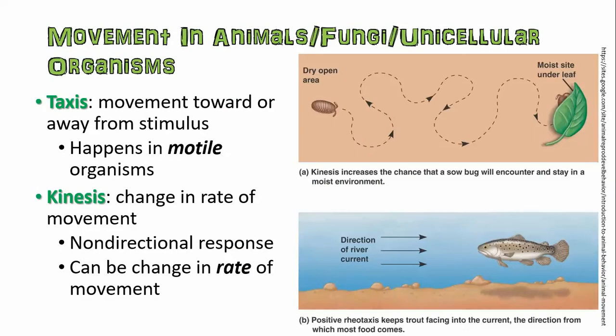You can also look at movement in animals, fungi, or unicellular organisms. Taxis is movement towards or away from a stimulus, and usually it involves some sort of prefix. For example, chemotaxis is moving towards or away from a chemical. You can have halotaxis — moving towards or away from salty conditions. You can put the word positive or negative in front of it. Positive chemotaxis means an organism is attracted to a specific chemical, and this happens mostly in organisms that are motile — meaning capable of movement.